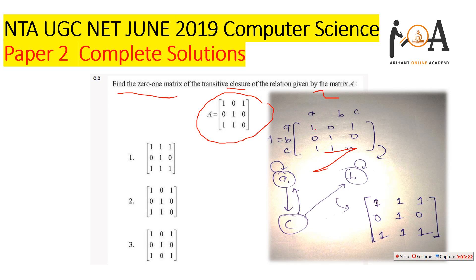From the graph: a has a self-loop so a can reach a; a cannot go directly to b; a can go to c. b cannot go to a; b has a self-loop; b cannot go to c. c can go to a directly; c can go to b directly; but c has no self-loop. Now we generate the transitive closure, representing the reachability. We can always reach a node from itself, so a to a, b to b, and c to c are all reachable.